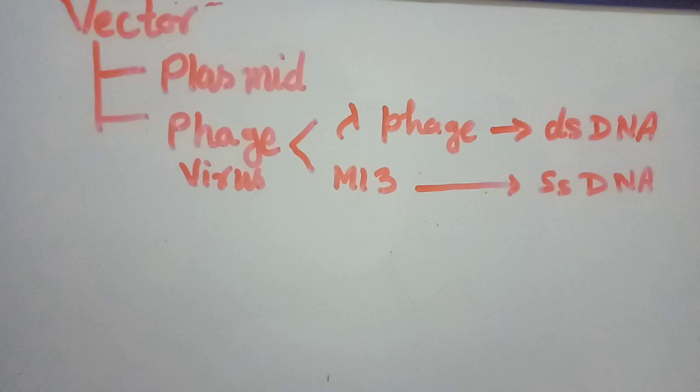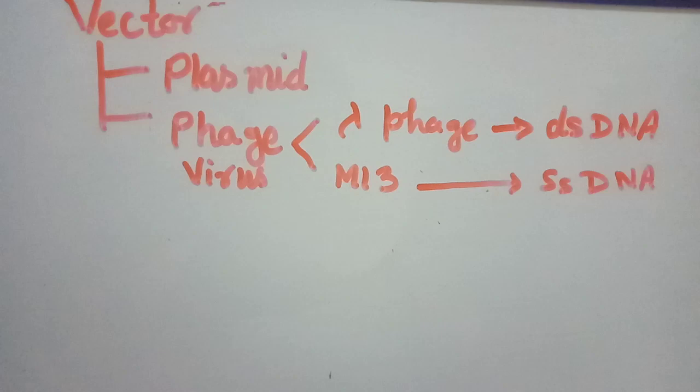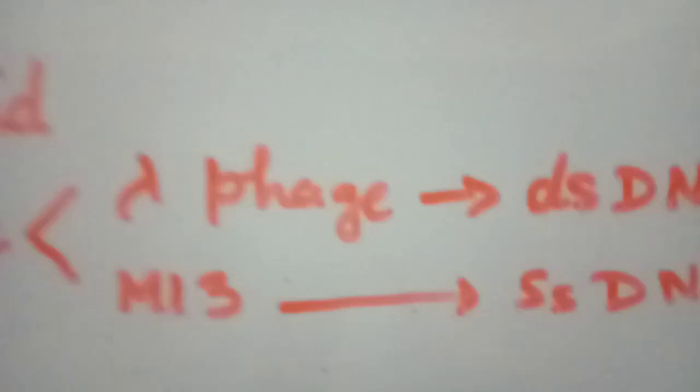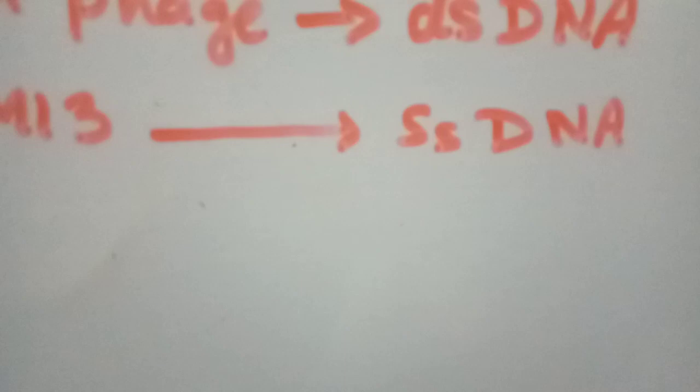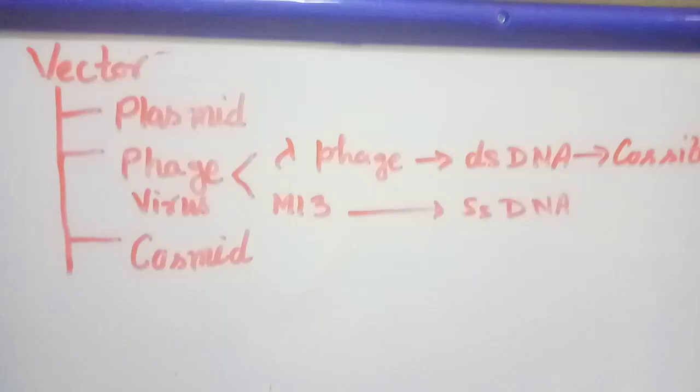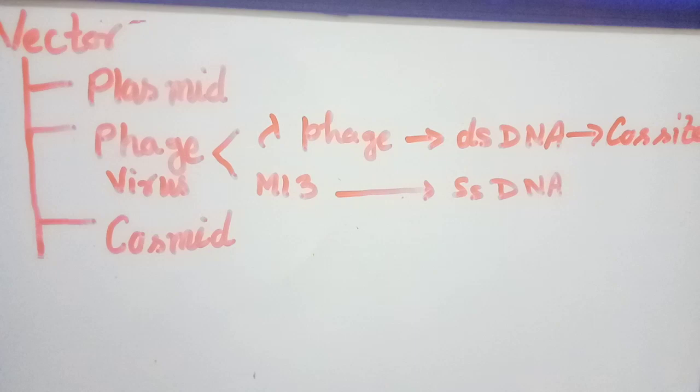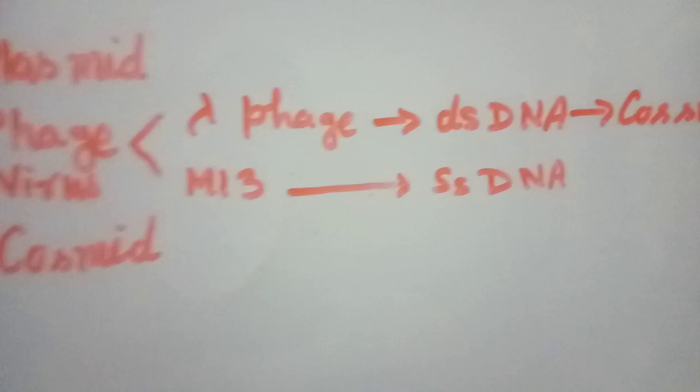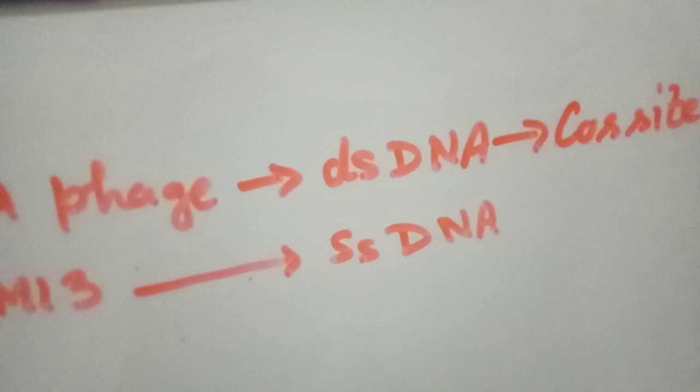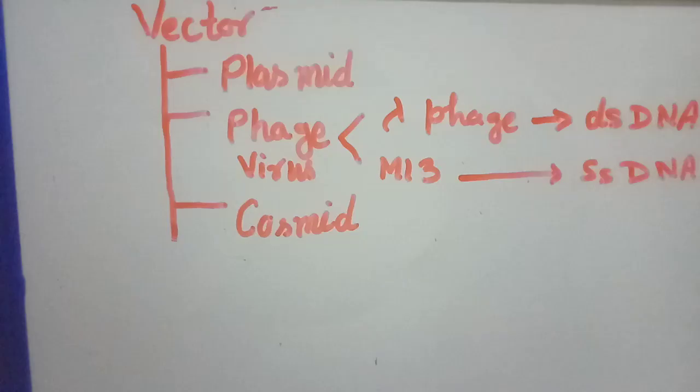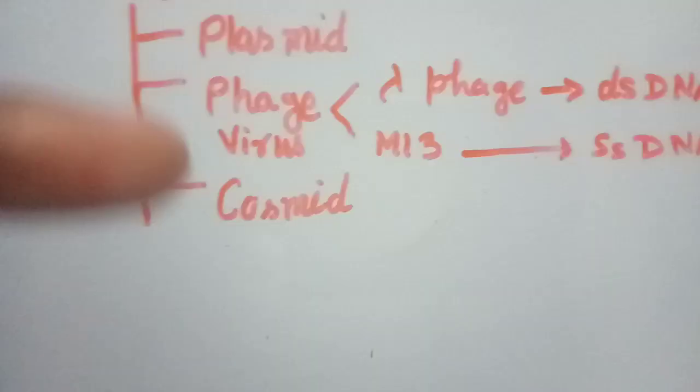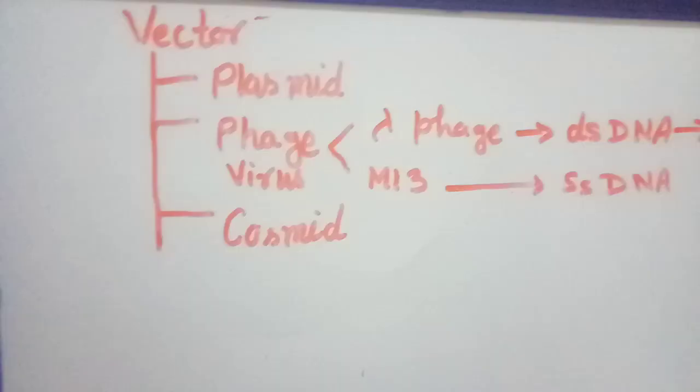Based on phage viruses, there are two types: lambda phage, which is double-stranded DNA, and M13-based, which is single-stranded DNA. Lambda phage is double-stranded DNA having the sticky end, the cos site, which is 12 base pair sticky in nature.